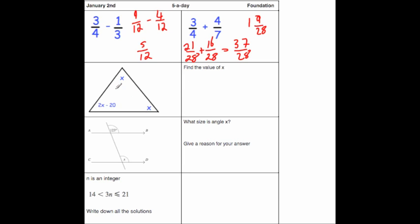We've been asked to find the value of the angle x. So here we've got a triangle, and it's x, x, and 2x minus 20.